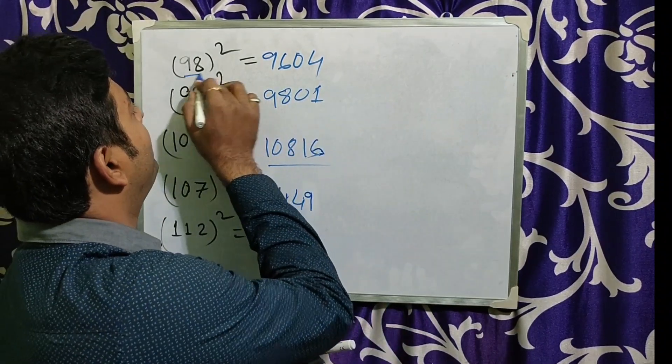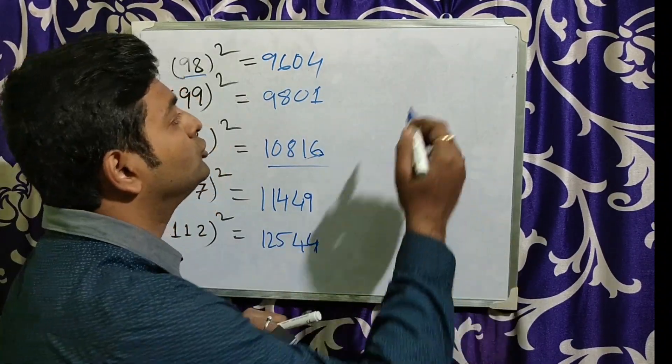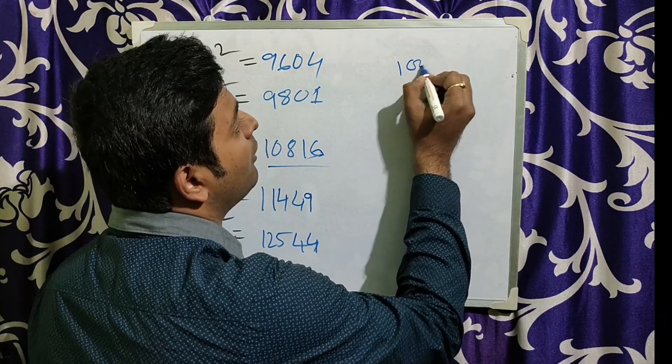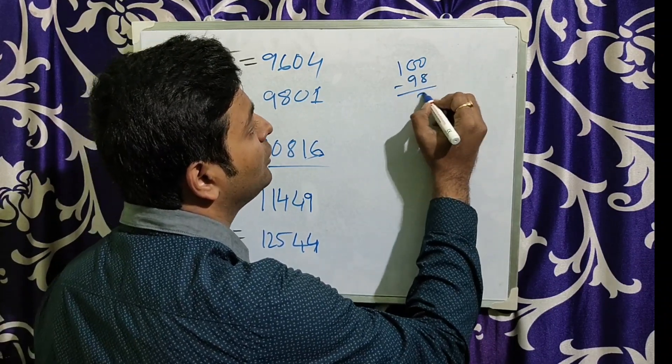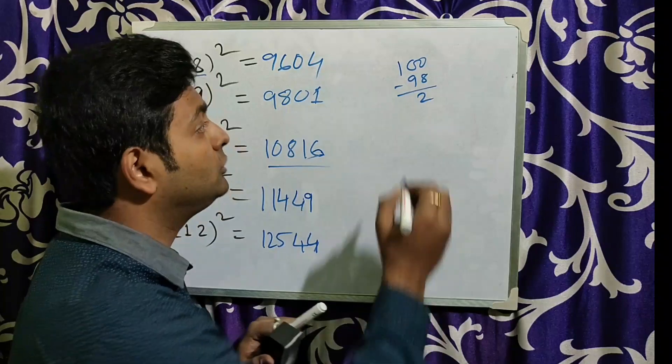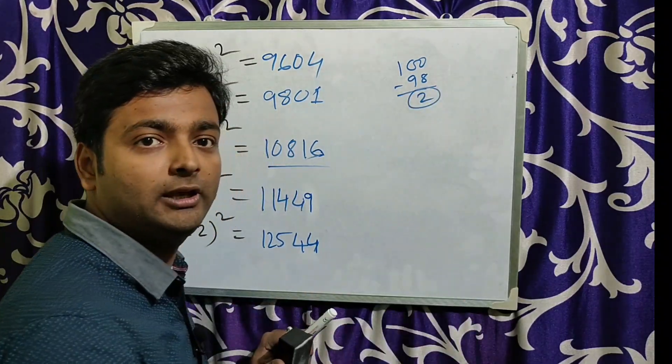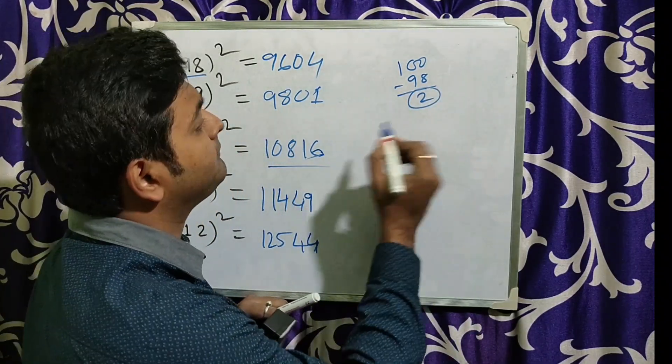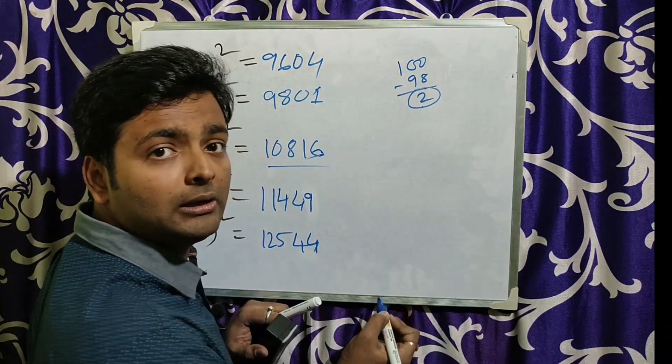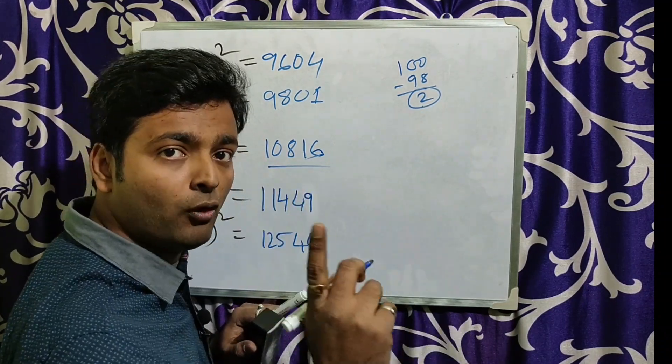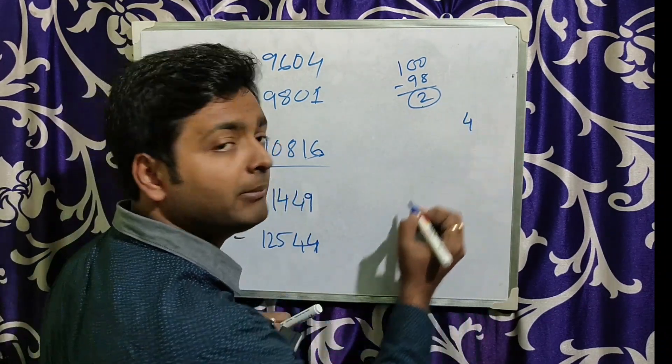The first one, the number is 98. The number is around 100, it is less than 2. This 2 is very important over there. First, see, 2 square is what? 2 square means 4. It is one digit number is coming.